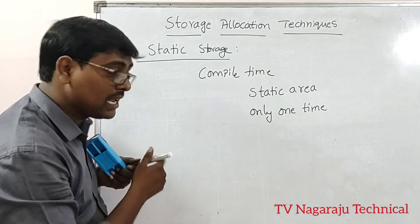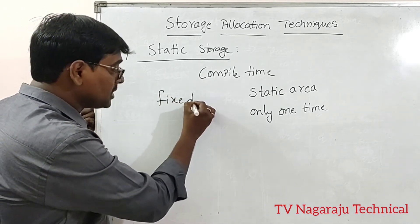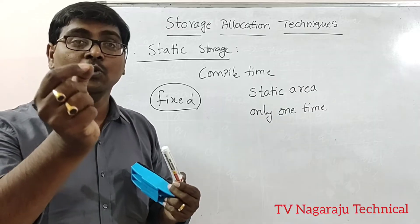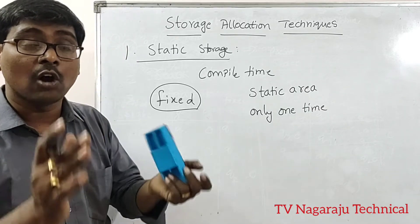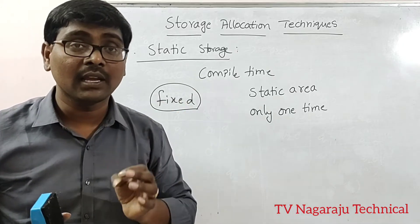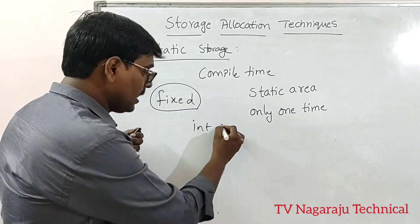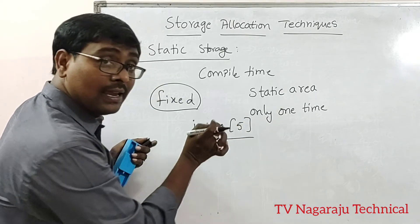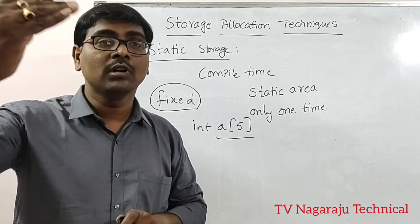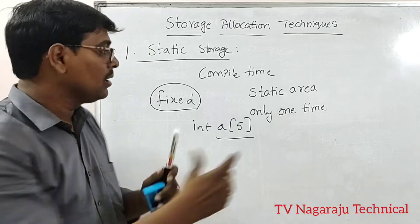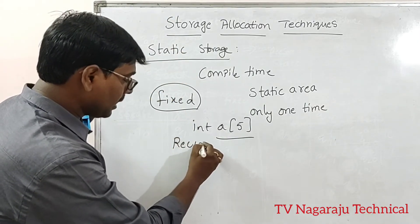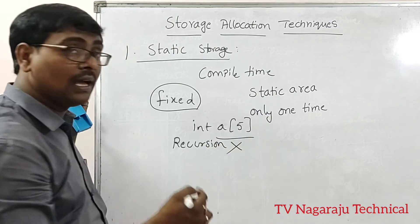The main problem with static storage allocation is that memory is allocated only one time and the size is fixed. Before allocation, you need to specify how much memory you require. For example, arrays use static memory allocation — if you declare 'int a[5]', memory is allocated for variable 'a' for five elements only, and it is not possible to increase that memory.